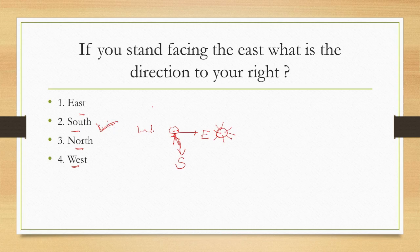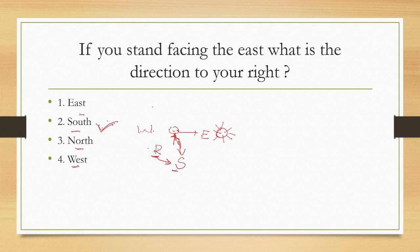To know the correct answer easily, keep in mind: right side starts with R, and after the letter R comes S — so south is to your right when facing east. This is a short mnemonic for this answer. Right side is R, and after R, south comes. Keep that answer in mind.